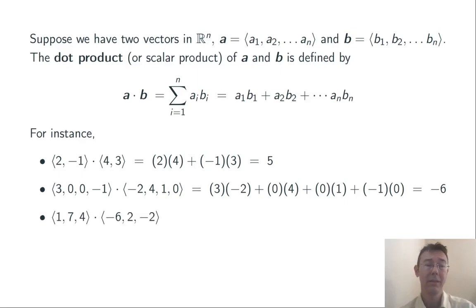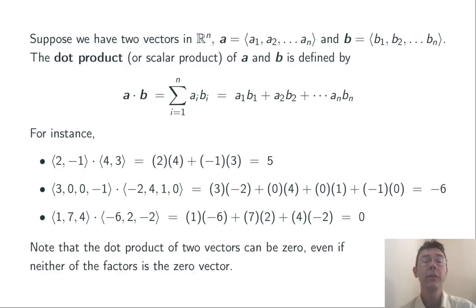One more example. ⟨1, 7, 4⟩ dotted with ⟨-6, 2, -2⟩. Notice here that the dot product of those two vectors was 0, even though neither one of the factors was 0. This is different than with the real numbers, for example, where if you have a product that's equal to 0, one of the factors has to be 0.